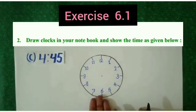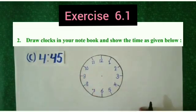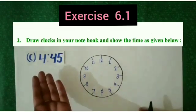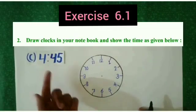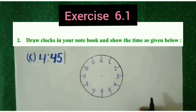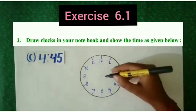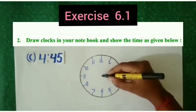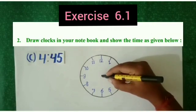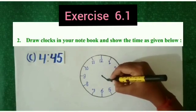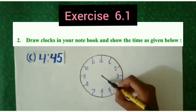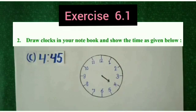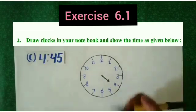Students, now you have to show 4:45 on this clock. So first of all, we will draw our hand pointing towards 4. So small hand, that is, our hand is pointing to 4. Students, now we will draw minute hand. Where should it be? On 45 minutes.